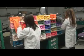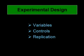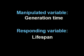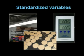So let's review. In our experiment, we've covered these three most important aspects of experimental design. The variable we are manipulating is generation time, and the variable we expect to respond is lifespan. We've also standardized any other variables that might affect the outcome, such as food, temperature, and light.